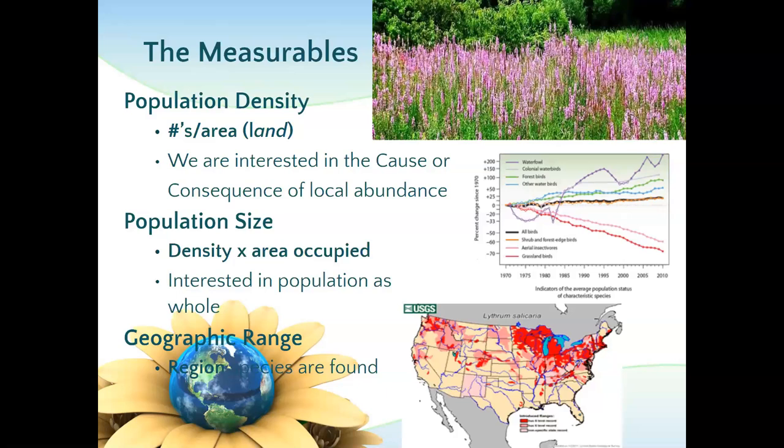So what can we measure within population ecology? We will do some math when we come back. We can measure population density — the concept of density is how much is in a given area, the numbers per area. We're interested in the cause or consequences of local abundance. Population size is simply how many there are — density times the area occupied.